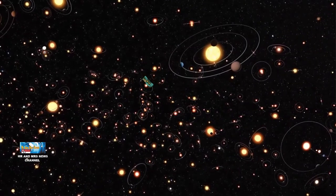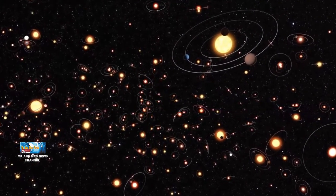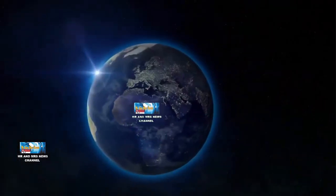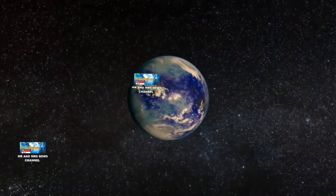Kepler-186F adalah salah satu dari lima planet yang ditemukan di data surya yang terletak di sekitar 490 tahun cahaya dari bumi. Planet ekstra surya yang baru ditemukan mengorbit sekitar 52,4 juta km dari mataharinya.